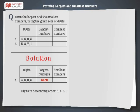Now to form the smallest number, arrange the given digits in ascending order such that 0 does not come at the start, that is 3, 0, 4 and 6. Hence the smallest number that can be formed using the digits 4, 6, 0 and 3 is 3046.